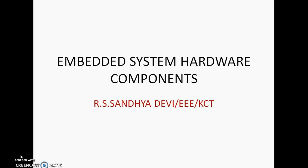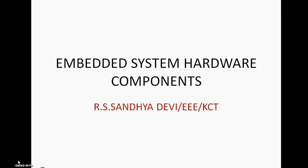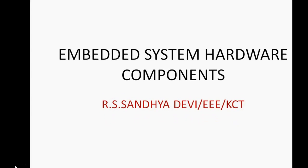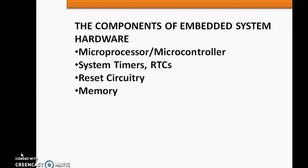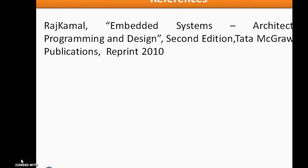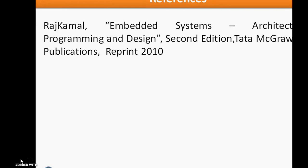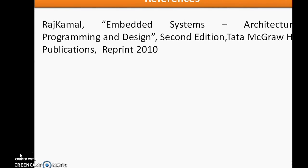Hello, I am Sandhya Devi, going to discuss a topic on embedded system hardware components. The topic will be discussed with a block diagram, concentrating on four important components: processor or controller, system timers, real-time clocks, resets, and memory. The rest of the components will be discussed in the next part. The book reference used is Embedded Systems: Architecture, Programming and Design by author Rajkamal.